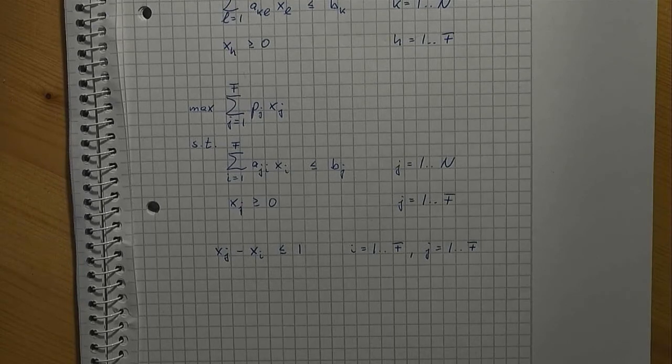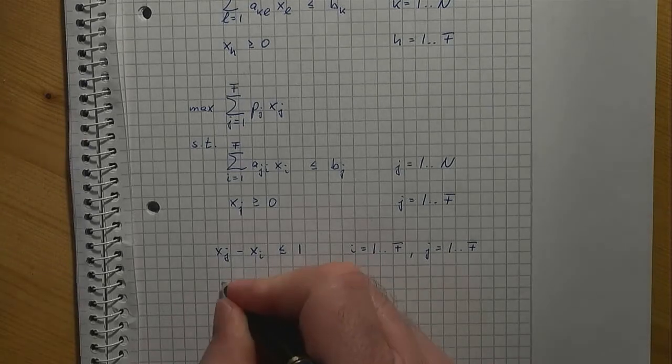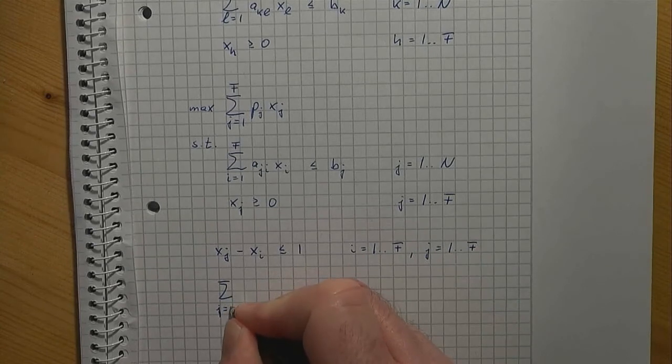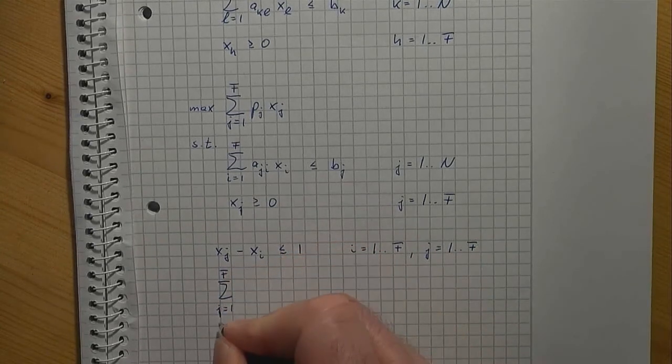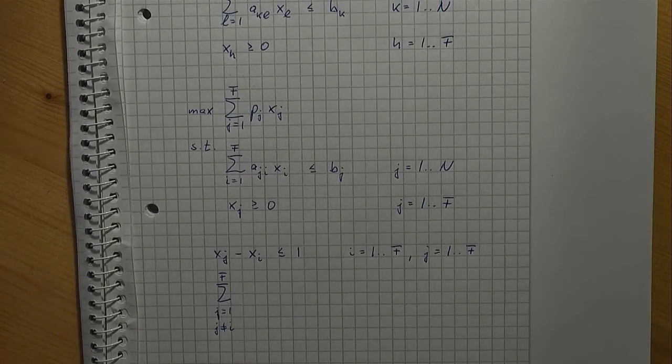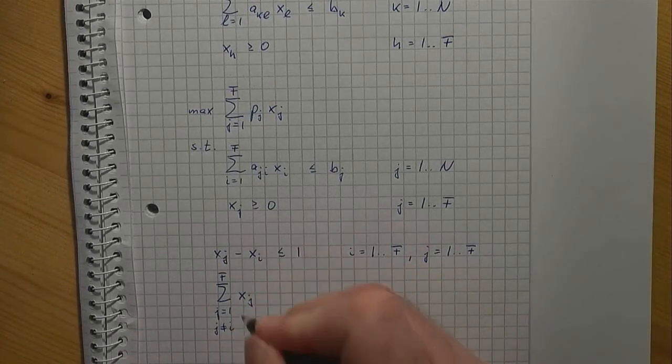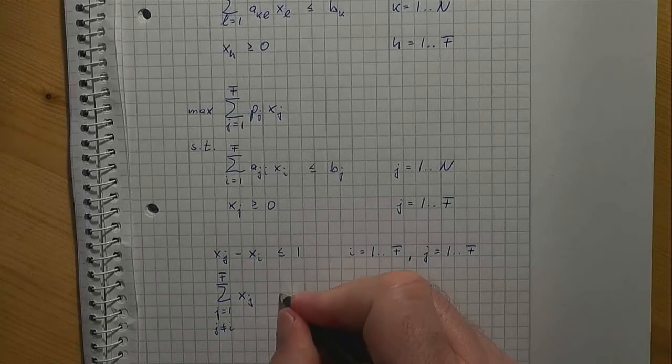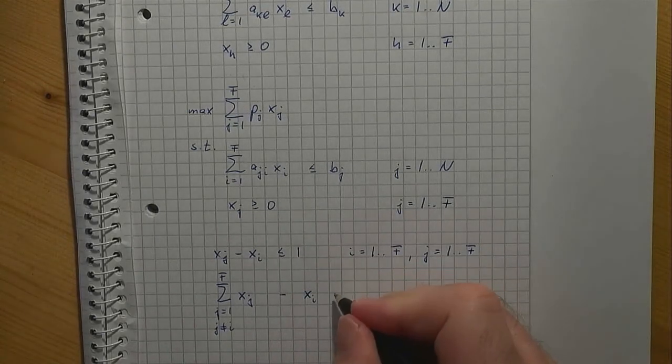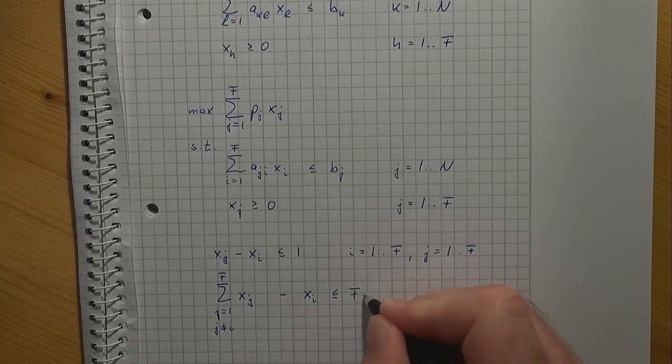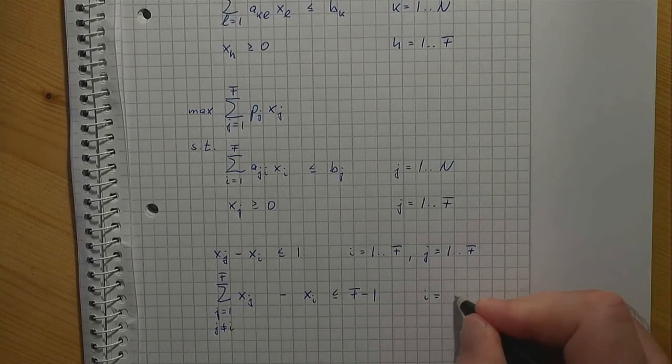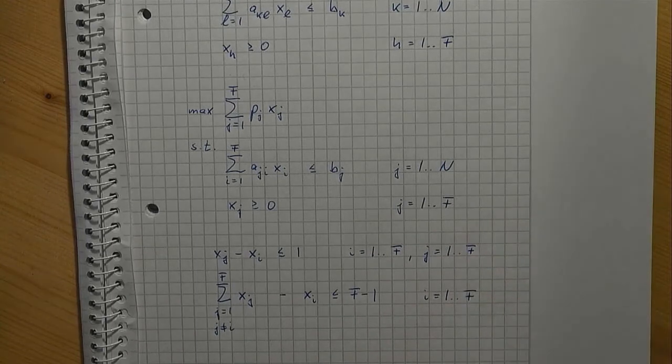Now, the following constraints express what we wanted to have: the sum from j equals 1 to f, j unequal to i, of xj minus xi is less than or equal to f minus 1 for all i from 1 to f.